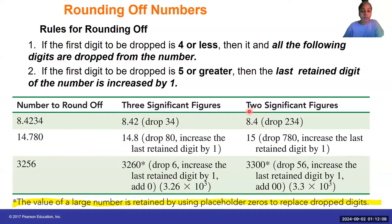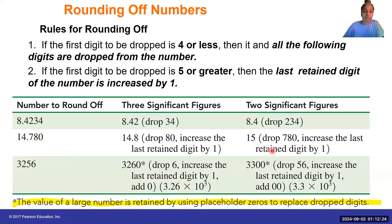What if I wanted to round off to two significant figures? That means I'm looking at the one and the four. The seven is greater than five, so I'm going to round this value off to 15.